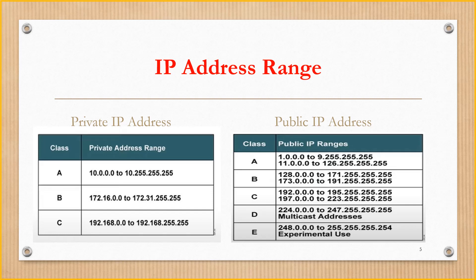In the previous lecture we saw the IP address classes. Here we can see that the private IP addresses and public IP addresses are segregated. Class A private IP address range is 10.0.0.0 to 10.255.255.255. Class B private IP address range is 172.16.0.0 to 172.31.255.255. Class C private IP address range is 192.168.0.0 to 192.168.255.255. The rest of all IP addresses, excluding the private IP address ranges, are public addresses, as you can see.